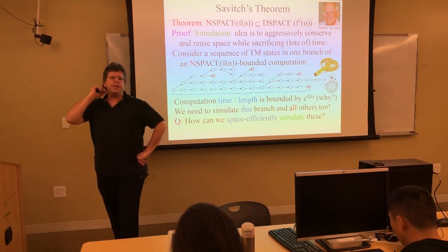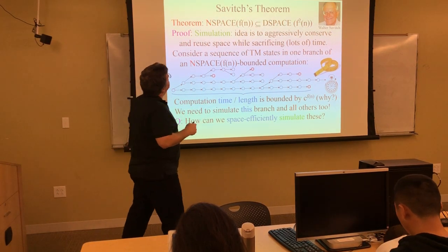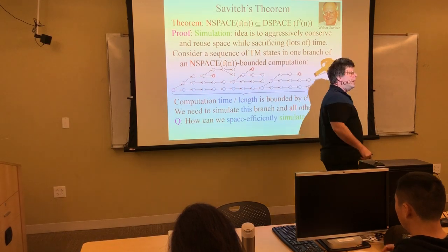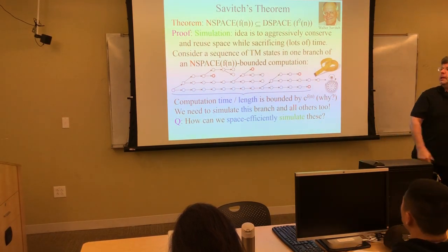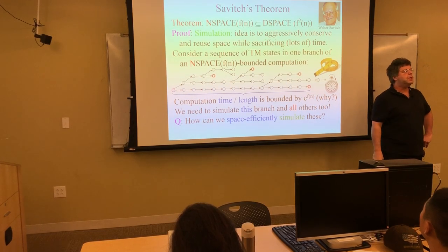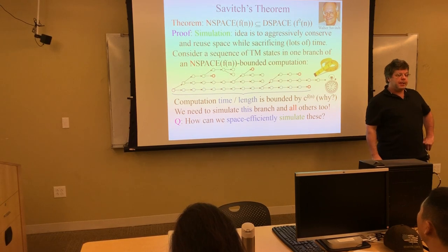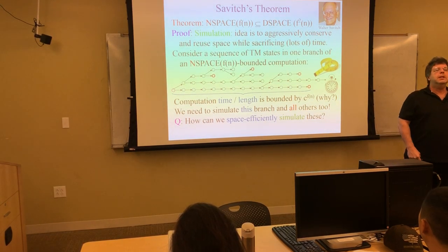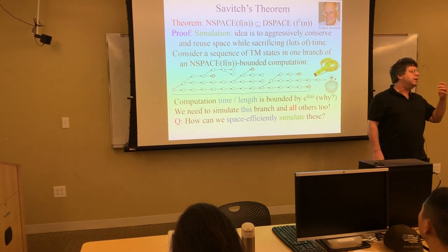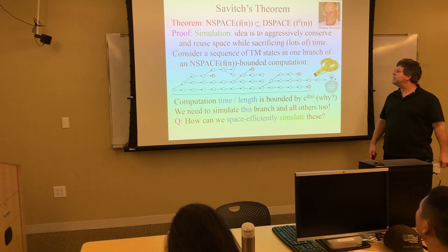Last time we talked about Savitch's Theorem. Basically, it says that you can get rid of a non-determinism aspect of a space-bounded computation by squaring the space at most. That's a pretty small price to pay, given that other ways of getting rid of non-determinism involve exponentiating various things, like time or number of states in the case of finite automata.